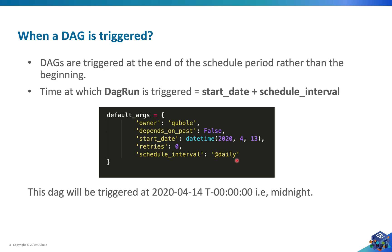When we were creating the DAG object, we provide another key which is the schedule interval. In this case it is daily, so this is a cron expression or a cron preset — we will talk about it in the upcoming slides. For now, all I need to say is that it means schedule this DAG every day. The DAG run will be created on 14th of April at midnight because our start date is 13th and our schedule interval is daily — so 13 plus 1 equals 14, and the DAG will be triggered on 14th of April at midnight.